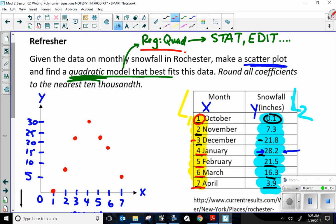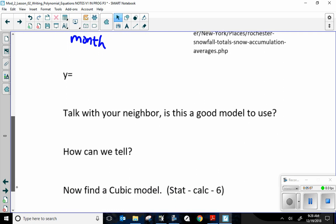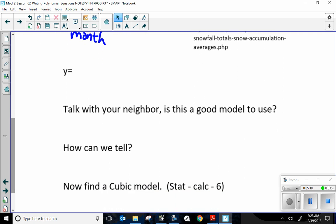We need to come up with our quadratic regression. They want a quadratic model that best fits our data here. And, before I do that, I'm going to scroll down here. Talk with your neighbor to see if this is a good model. How can we tell? Now, find a cubic model.